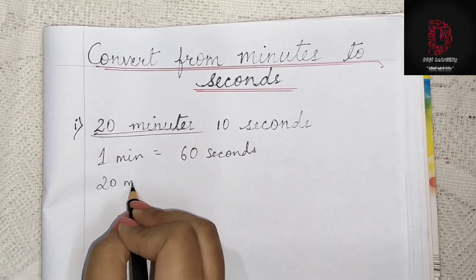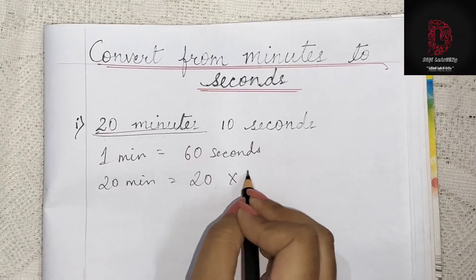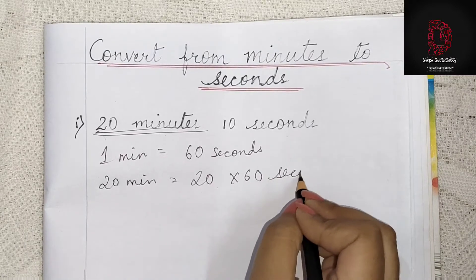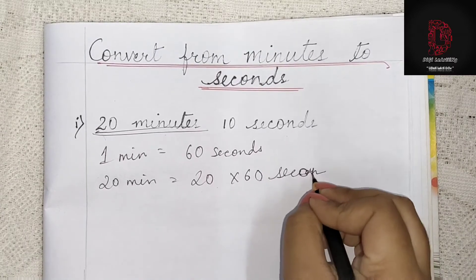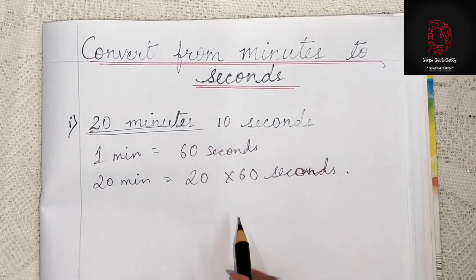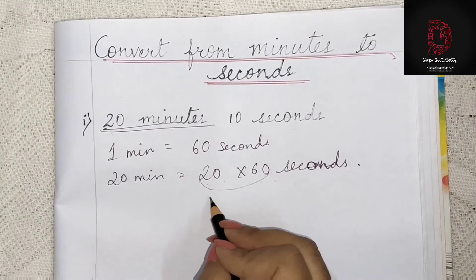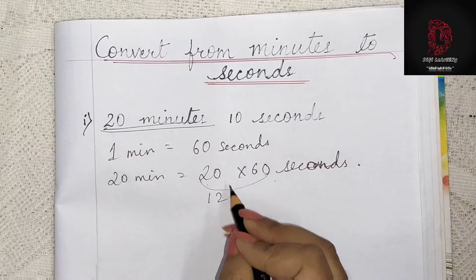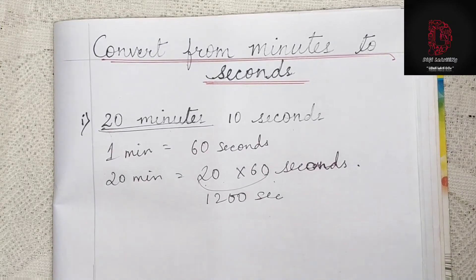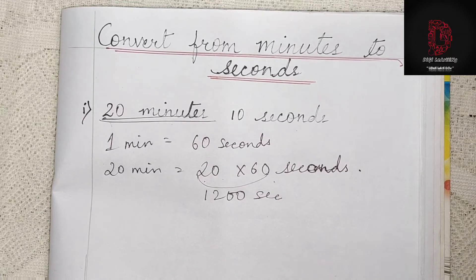So for the first example, 20 minutes and 10 seconds — we need to convert this to seconds. Since 1 minute equals 60 seconds, 20 minutes is equal to 20 into 60 seconds.